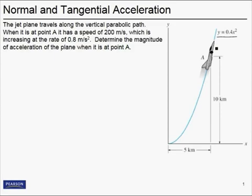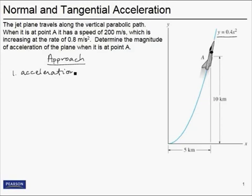Because the plane is traveling on a curved path, a really useful way to look at the acceleration is using normal and tangential components. When we do a normal and tangential component of acceleration problem, we follow a typical approach. You've seen other ways to write acceleration equations and other kinematic type equations, but we're going to use the normal and tangential components in this problem.